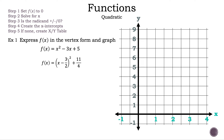Now let's find the x-intercepts. Step 1, set f of x to 0. Step 2, solve for x. Step 3, is the radicand positive, negative, or 0? Step 4, create the x-intercepts. Step 5, if none, create an xy table. Another name for x-intercepts is the zeros. So we can set the output to 0 and solve for x.